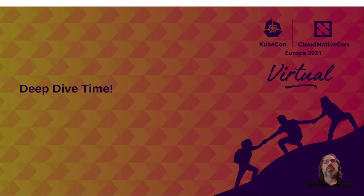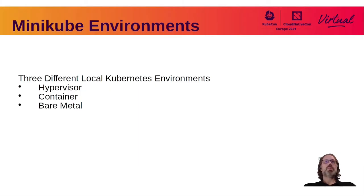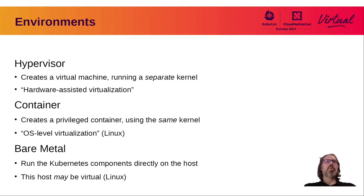Hello, my name is Anders Björklund, and I've been working as a Minikube maintainer for two and a half years. Today I will be talking about three different local Kubernetes environments: the hypervisor, the container, and the bare metal environment. The hypervisor environment creates a virtual machine running a separate kernel — also called hardware-assisted virtualization. In the container environment, we create a system-privileged container using the same kernel as the host — also called OS-level virtualization. In bare metal, we run the Kubernetes components directly on the host, and this host may in turn be a virtual machine.